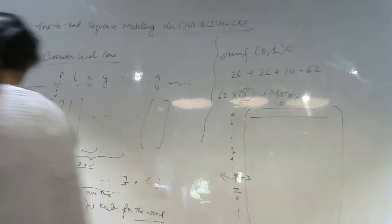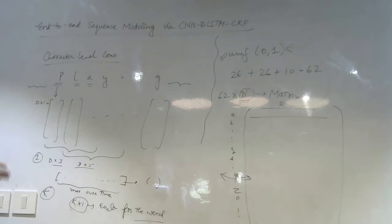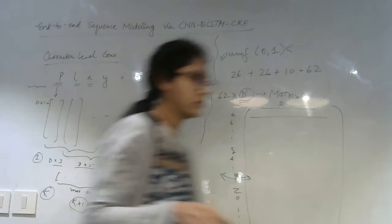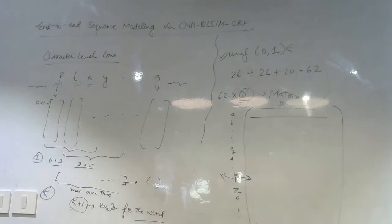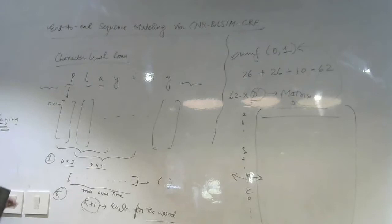This is one convolution that you apply. You get a vector, you take the max, you get one value, one scalar value. Now you apply K convolutions like this, and then you get a K cross one vector for the word. So this is how character level contributions work. K convolutions with K filters. You apply one filter, then another filter, then another filter. D cross three is one filter.